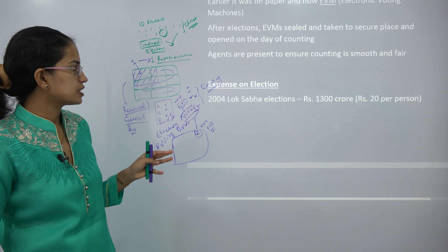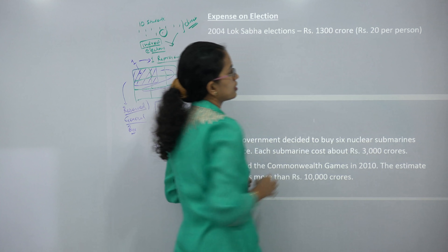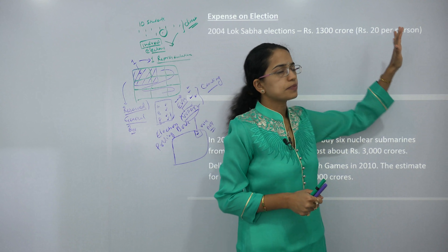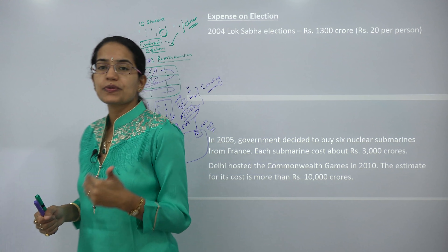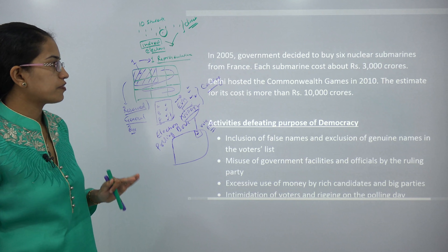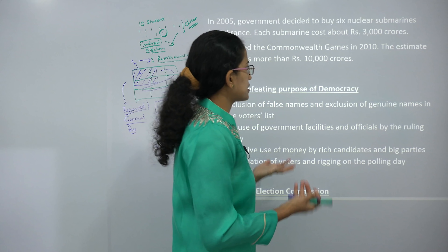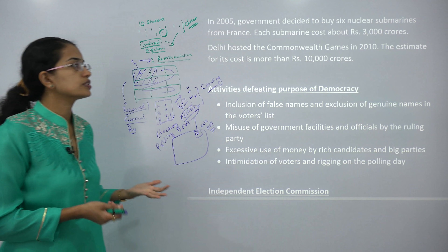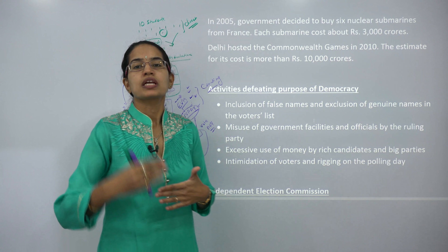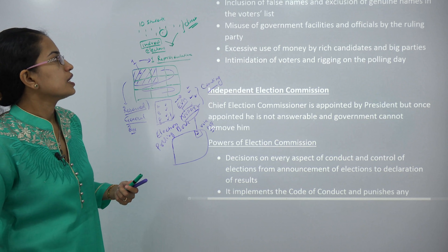Regarding expenses, the 2004 Lok Sabha election shows nearly 1,300 crores were spent on the election process, accounting for roughly ₹20 per person. However, to put this in perspective, each of the 6 nuclear submarines purchased from France cost around 3,000 crores, and the amount spent on the 2010 Olympic games was 10,000 crores. So election expenditure is much less comparatively, and it is important for having a good ruling party that can bring dynamic changes to the country.